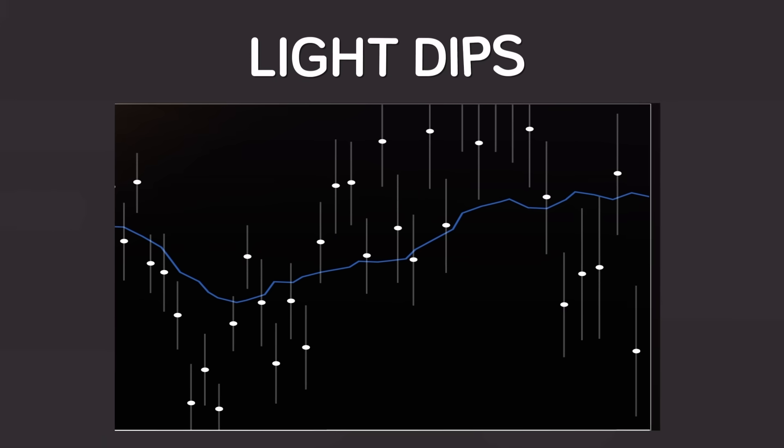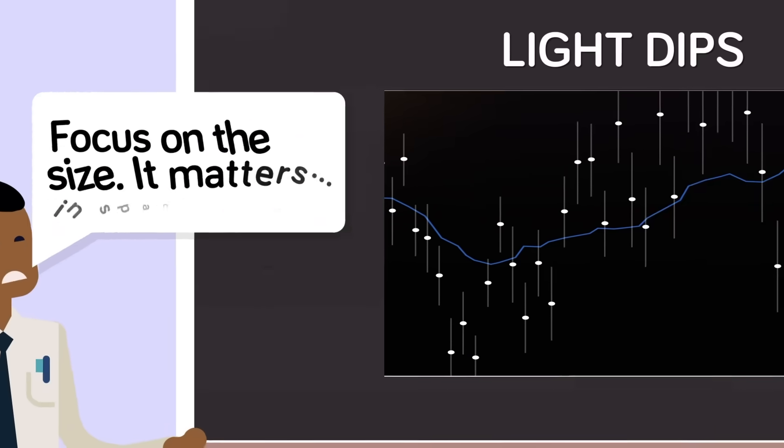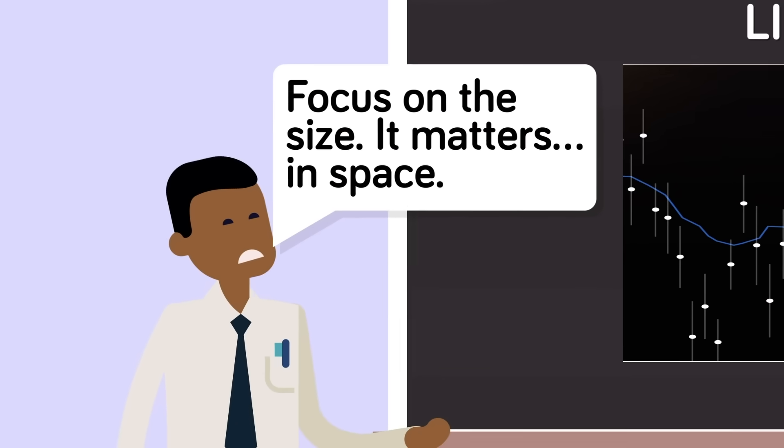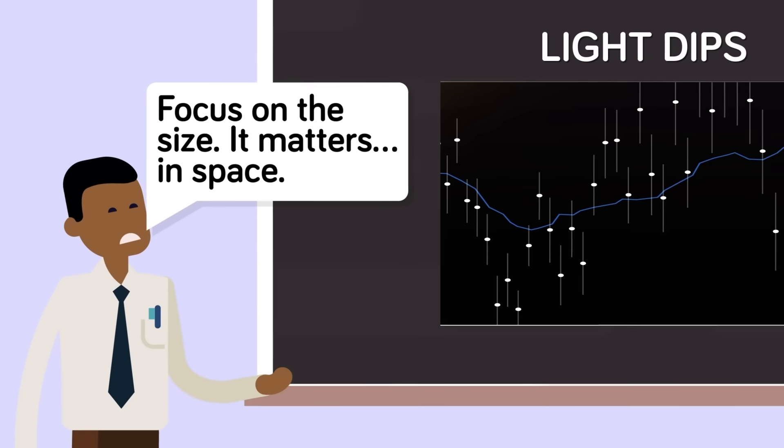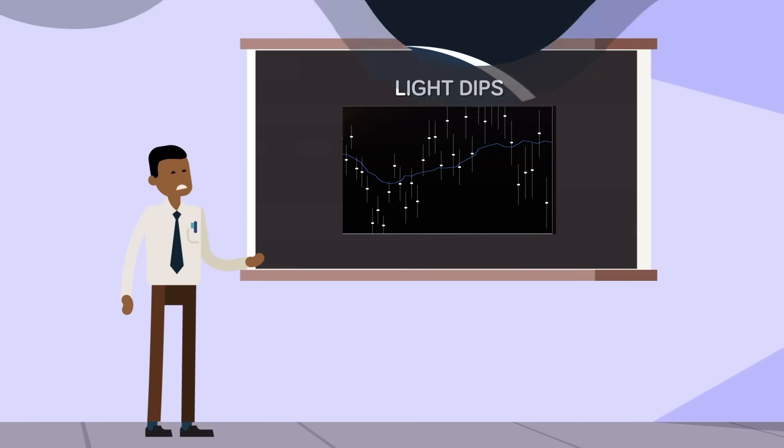Any dip in this light graph means that an object is moving between us and the star we're observing. This allows us to calculate the size of the object with very high precision, and thus revealing the presence of distant planets in orbit. A similar occultation method could be used to find Planet X.